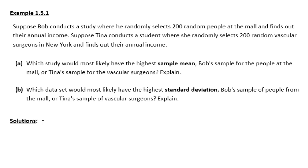The scenario here is that we have Bob, who conducts a study where he randomly selects 200 people from the mall and finds their annual income. And then there's Tina, who conducts a study where she randomly selects 200 random vascular surgeons in New York and finds their annual income.